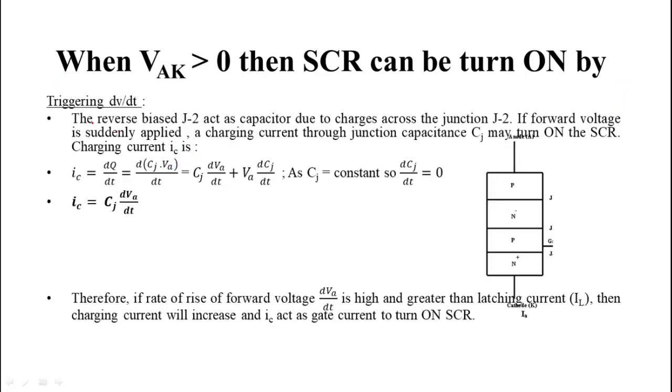Now third method is dv by dt triggering. As I already told you that mandatory condition to make the SCR turn on is that the SCR must be forward bias, or we can say that anode to cathode voltage must be greater than zero. When SCR is forward bias, then this junction J1 and this junction J3 act as forward bias while this junction J2 act as reverse bias. This reverse bias junction has immobile ions around it.